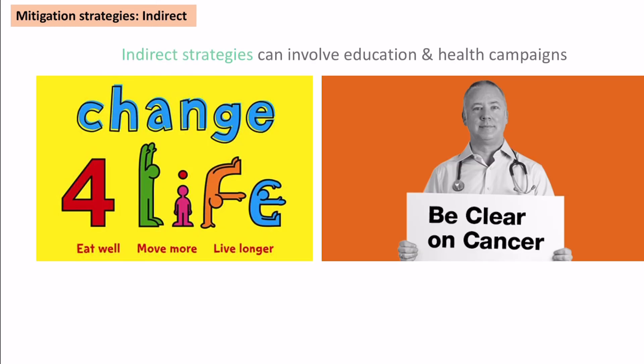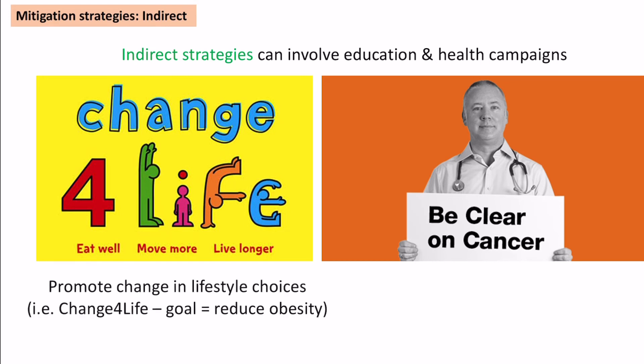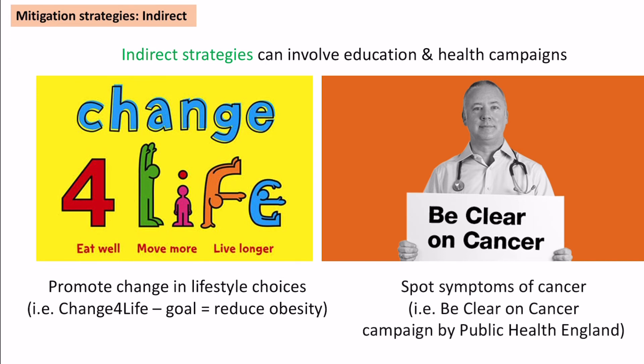Indirect strategies are slightly different, often involving education and campaigns. Two examples are the Change4Life campaign, which tried to reduce obesity by changing people's lifestyle choices, and a Public Health England campaign called 'Be Clear on Cancer', which told people what symptoms to look out for so they could self-identify before seeing a doctor — rather than ignoring symptoms.